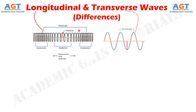Transverse waves, on the other hand, occur when a disturbance causes oscillations perpendicular — at right angles — to the propagation, the direction of energy transfer. Examples of transverse waves are a string on a guitar vibrating or ripples on the surface of water.